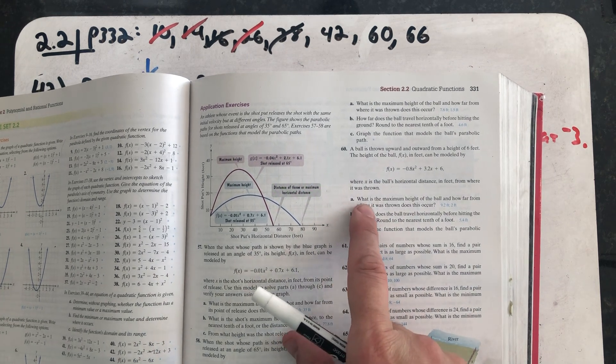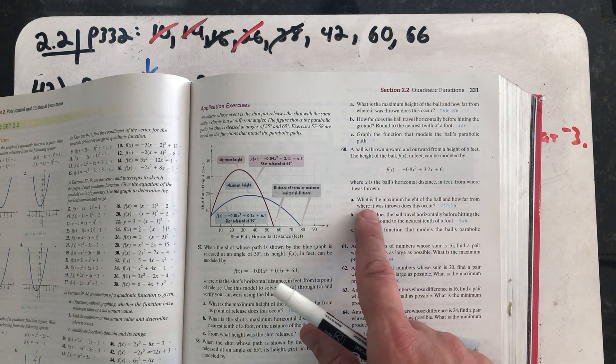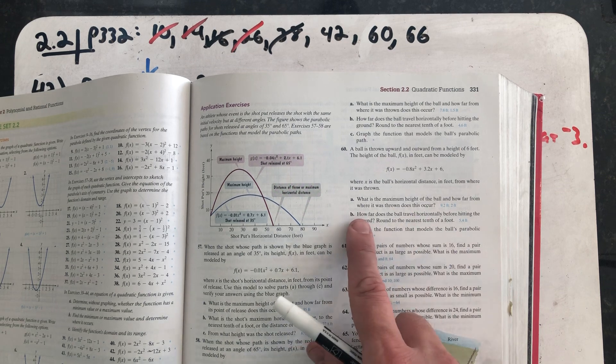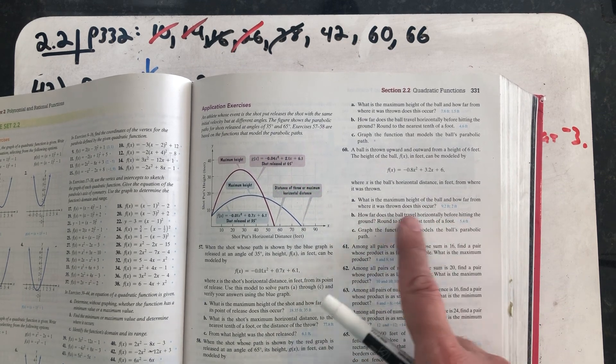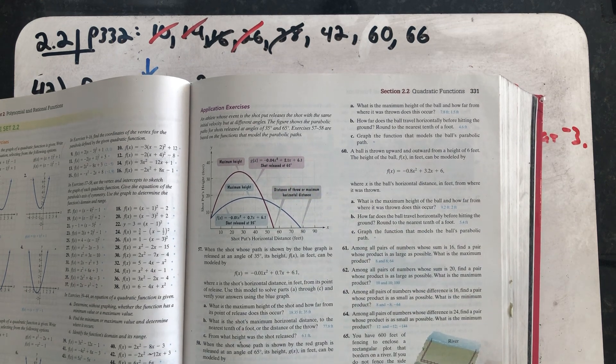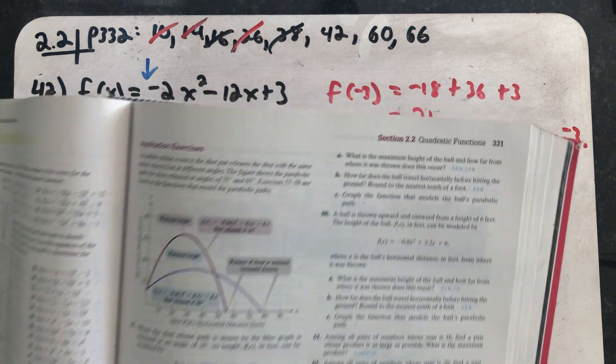Part A: What is the maximum height of the ball and how far from where it was thrown does this occur? Part B: How far does the ball travel horizontally before hitting the ground? Round to the nearest tenth of a foot. And then graph the function that models the ball's parabolic path.